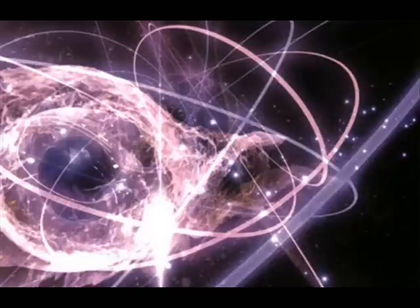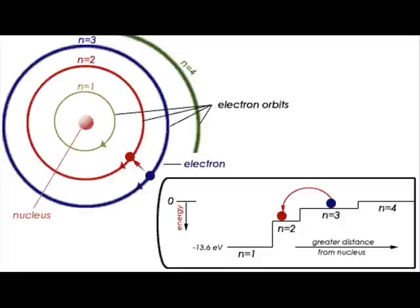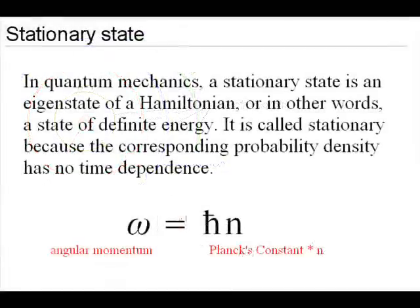You see, normally quantum physics is described by the stationary quantum states. That's the orbits that the electrons occupy in the atom. And these orbits are described by a quantity of angular momentum. And this angular momentum is an integer multiple of Planck's constant.